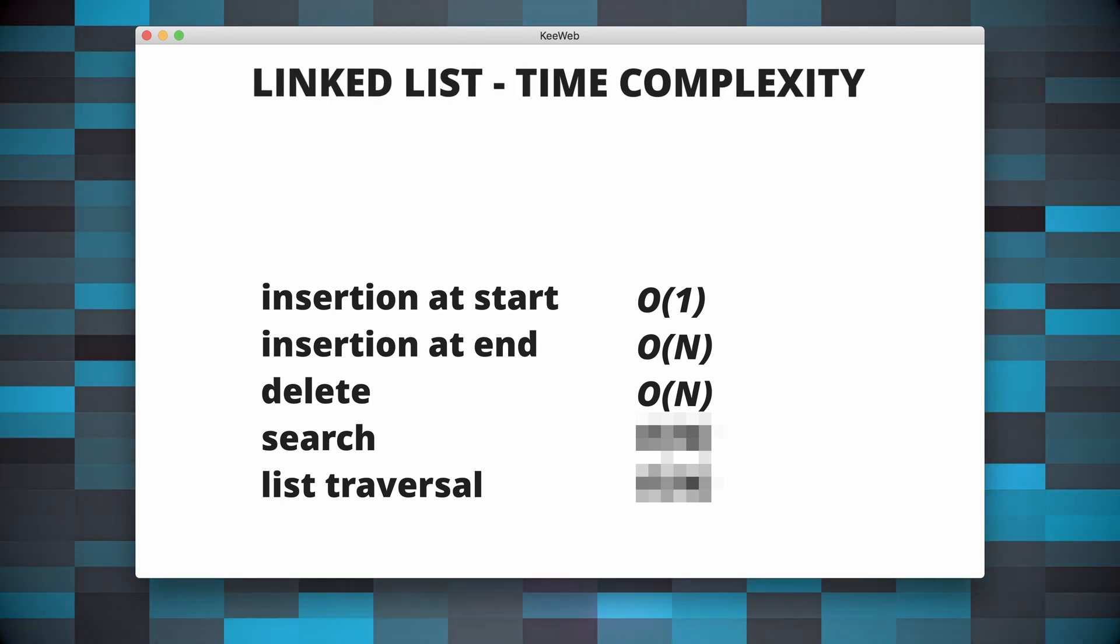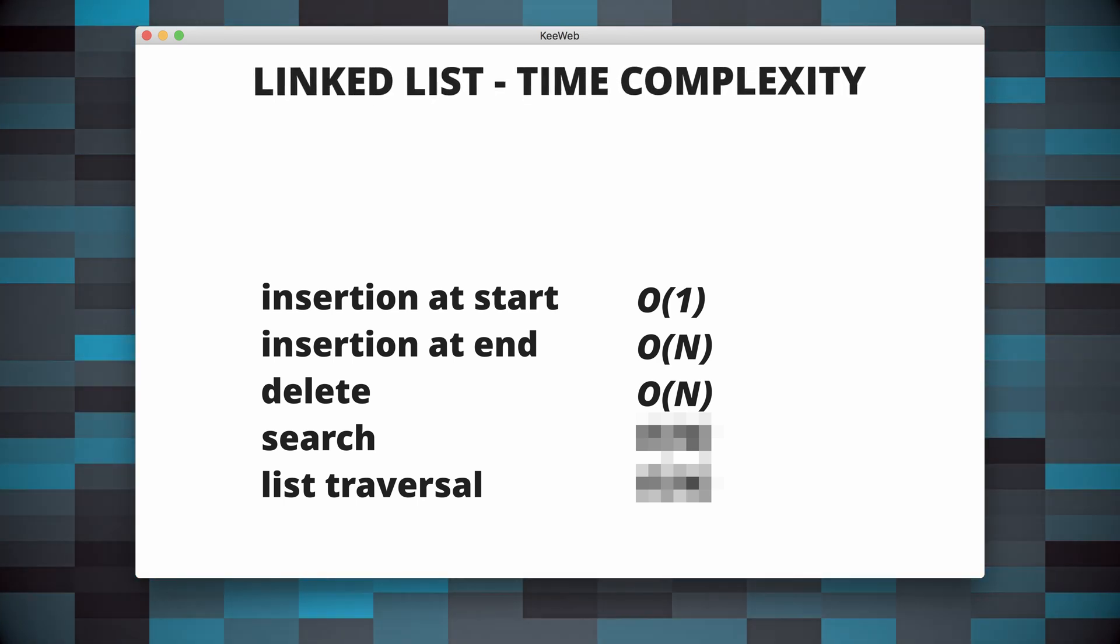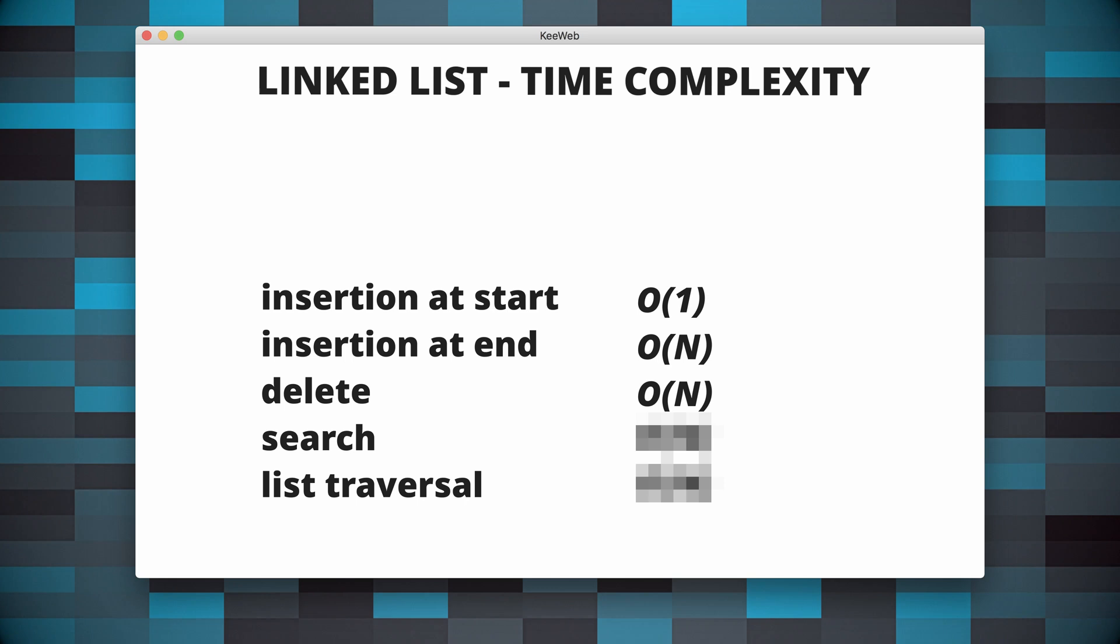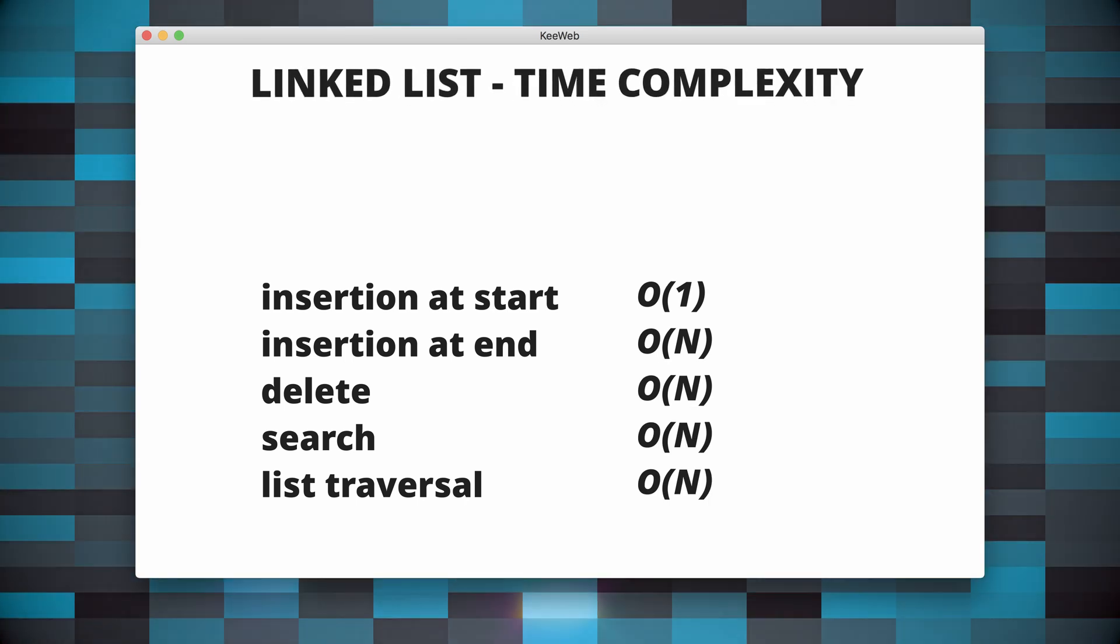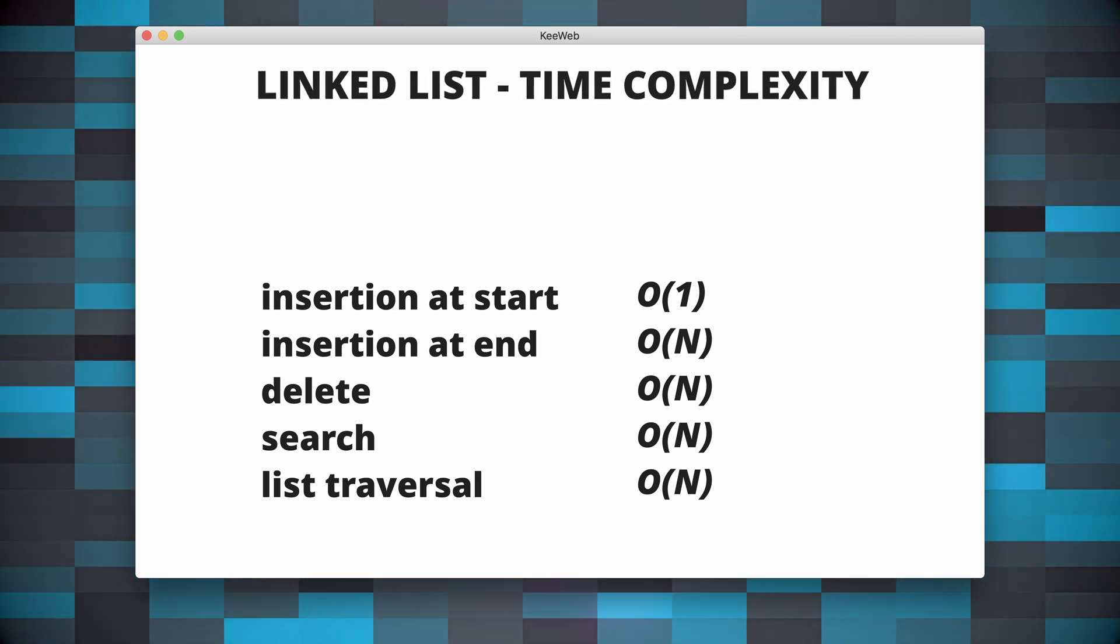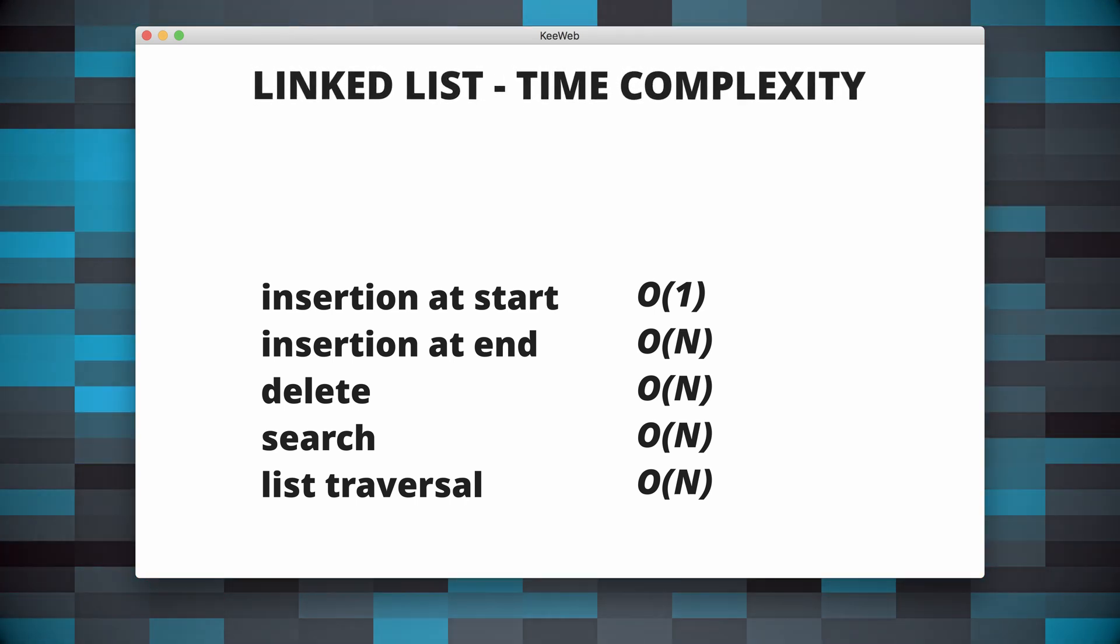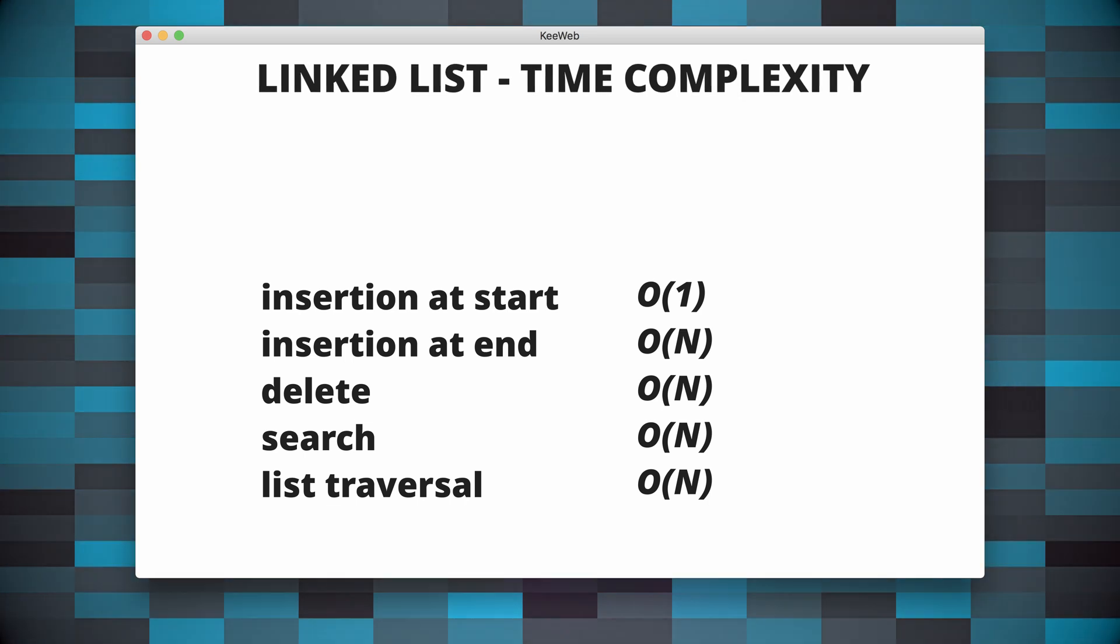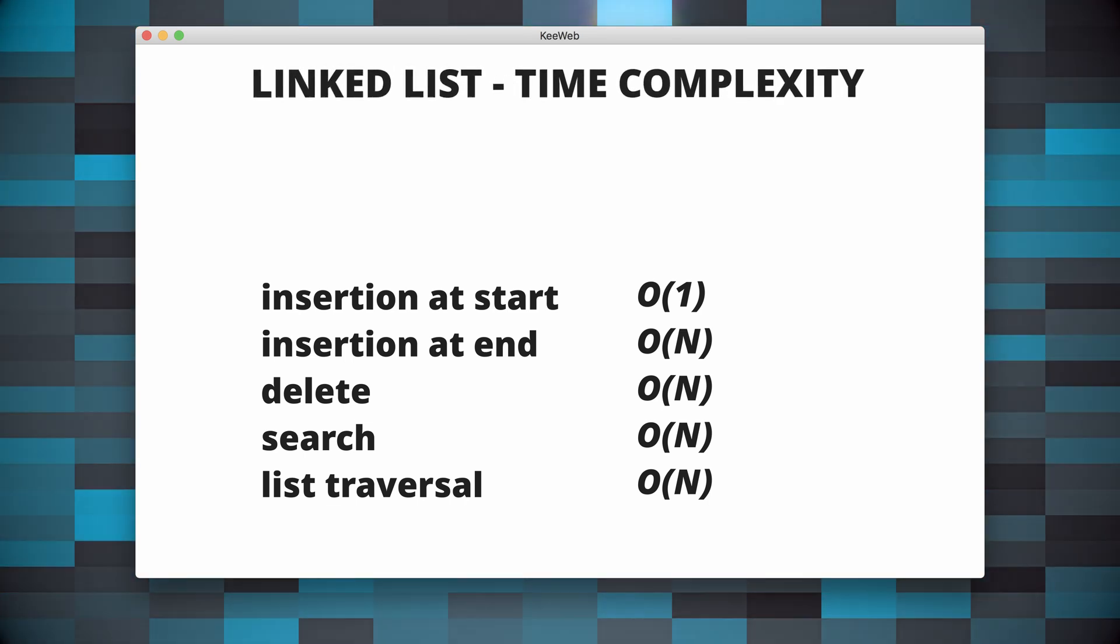Search is another operation that takes O(n) time, and this is because the element might not be in the list or might be at the end of the list, so we have to traverse through the length of the list.